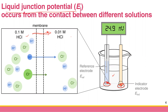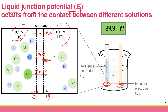Because protons are smaller, they move faster than chloride. So protons arrive on the right side first, making it relatively more positive, while the left side becomes a little bit negative because chloride comes later. You are creating a separation of charge — and separation of charge is basically potential, if you remember physics. This is why a membrane separating two solutions of different concentration generates liquid junction potential.